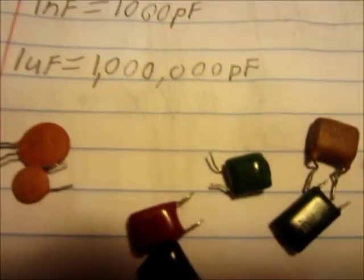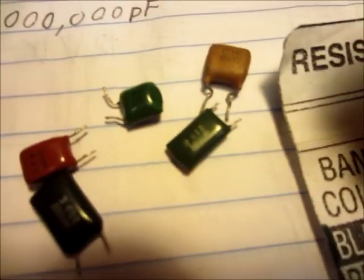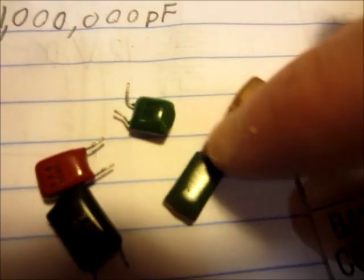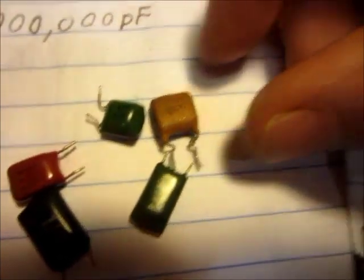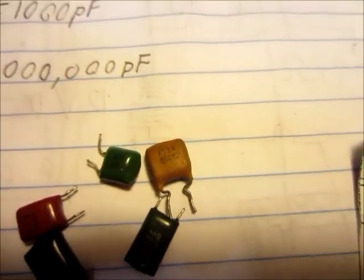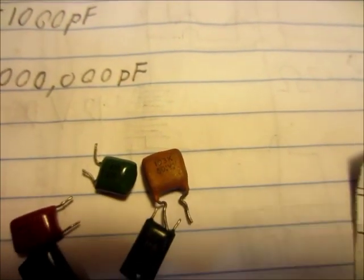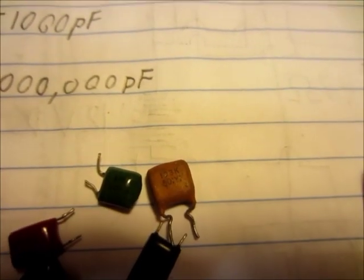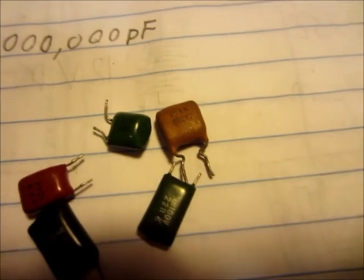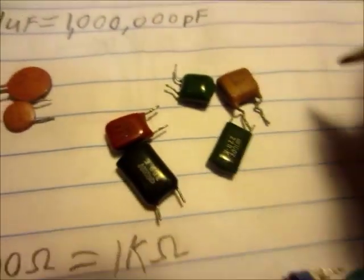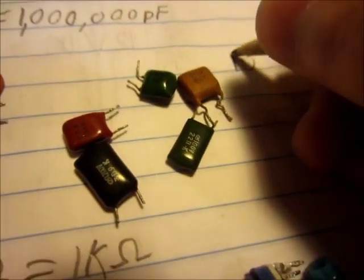What you want to look for on the capacitors is a three-digit number. That's the most common way they're marked. This one here, the number is 103. So the first two digits are the actual number.